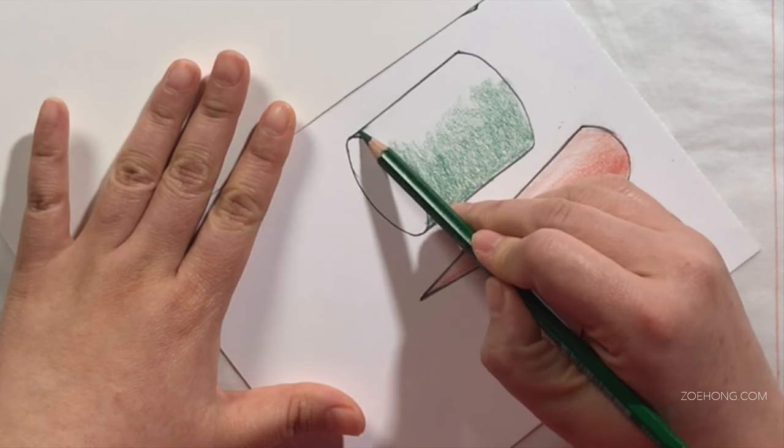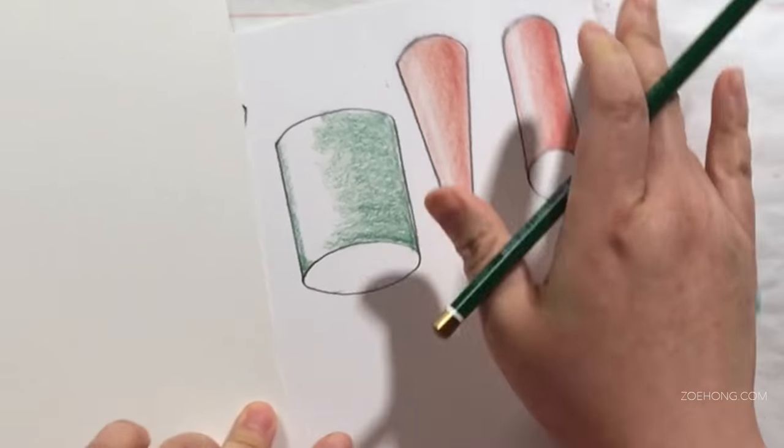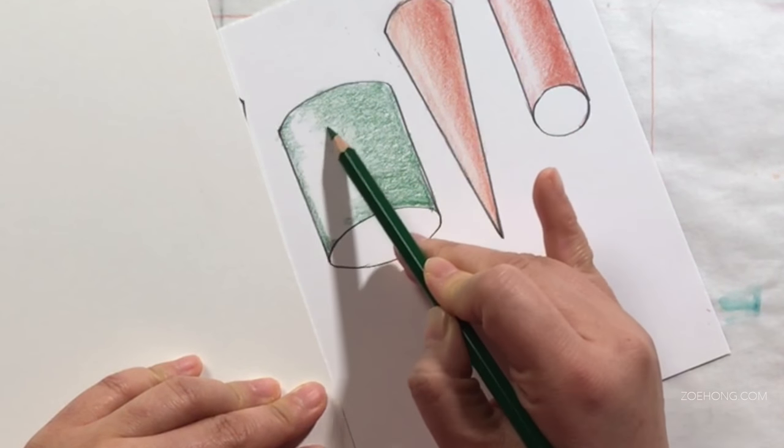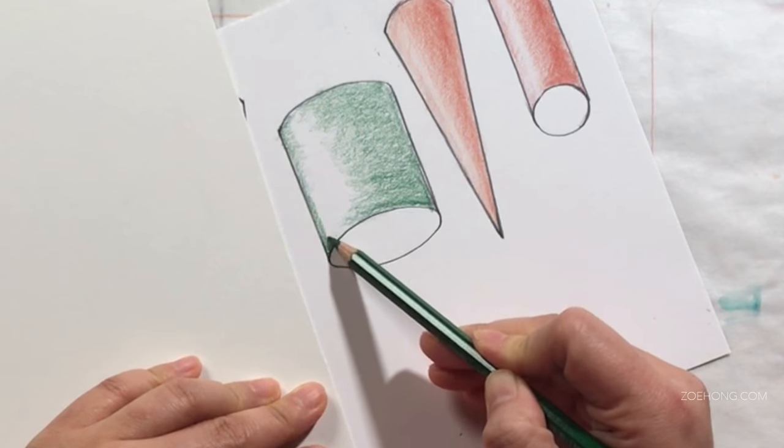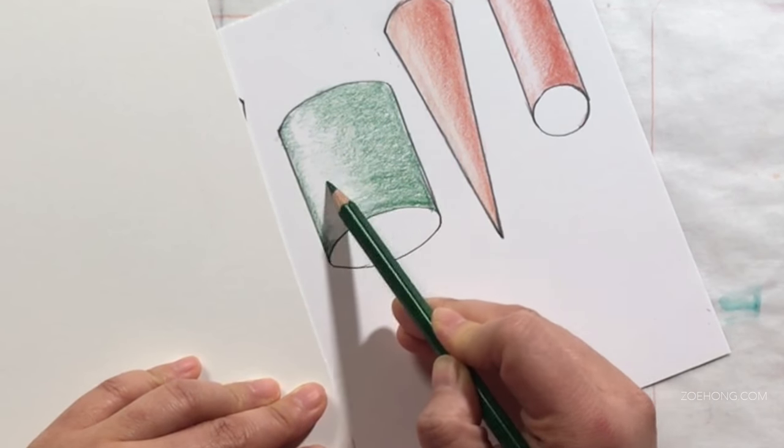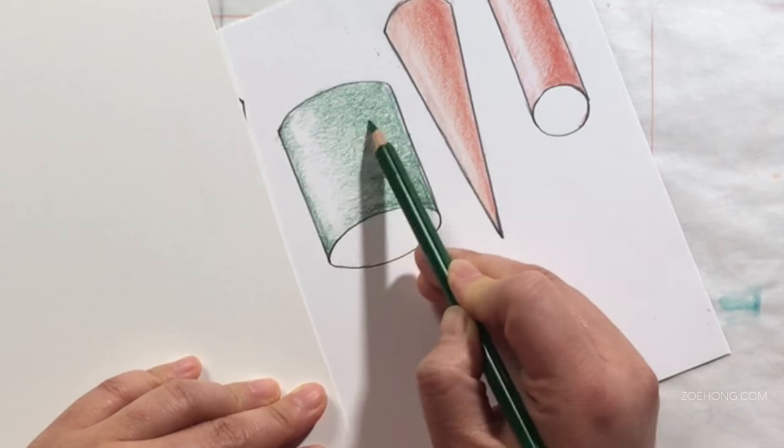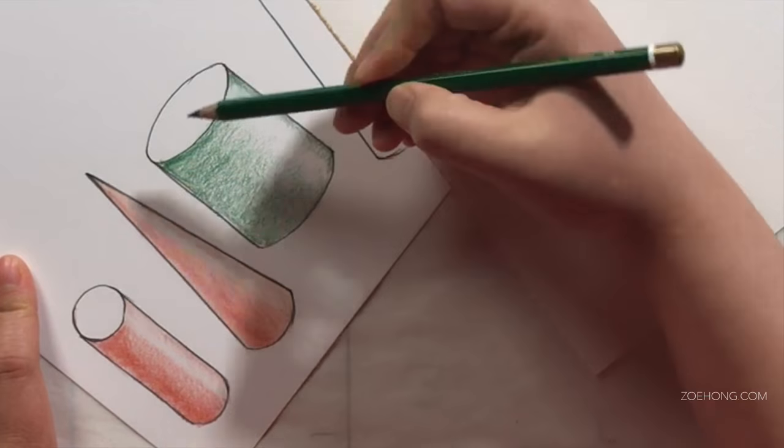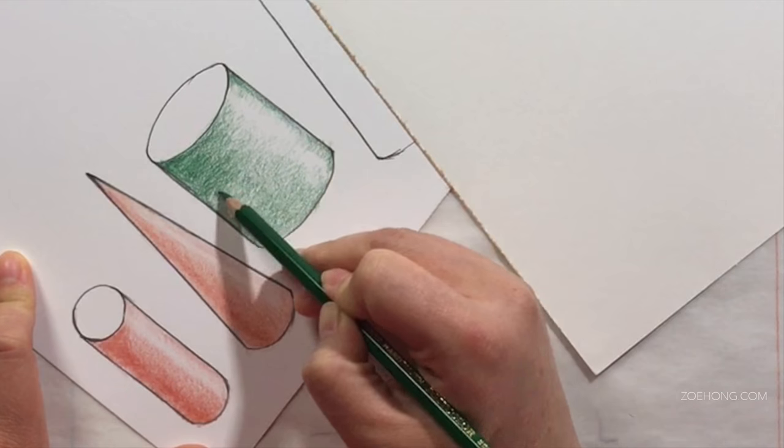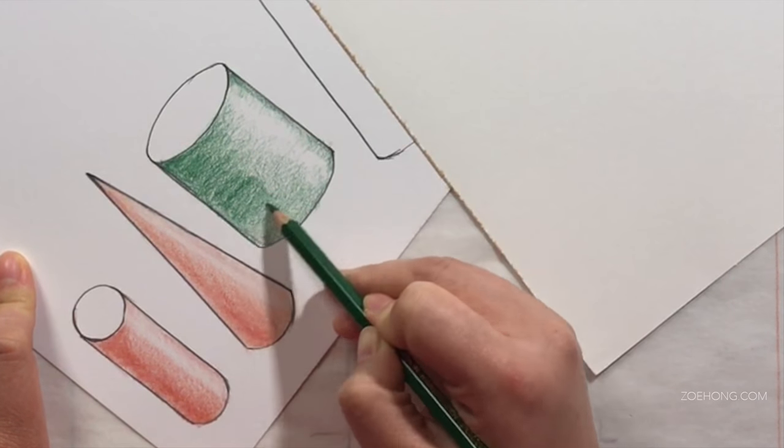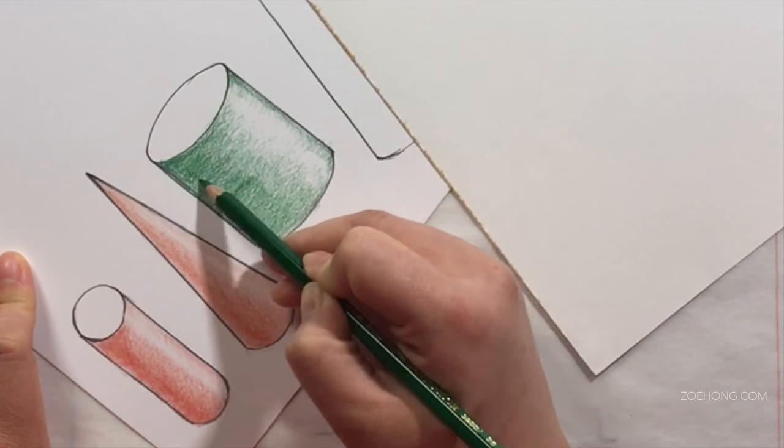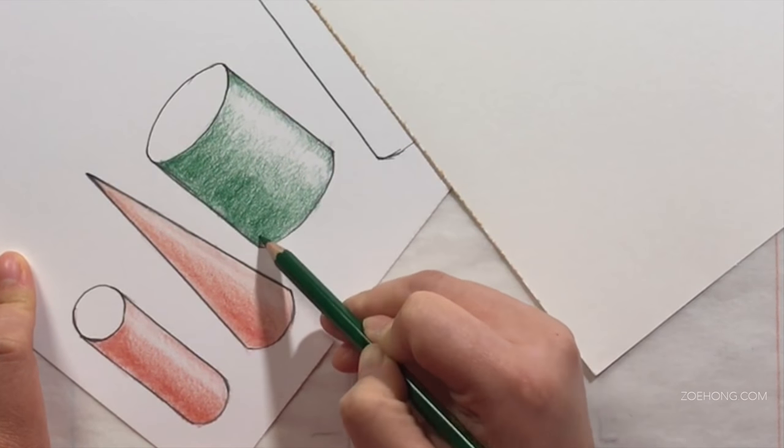When I'm coloring things in with a darker color like this dark green, I'm probably not going to be able to erase enough of it to get the highlight, so I make sure to leave enough of the white of the paper to create the highlight. I like to use the pencil strokes in the direction of the thing that I am coloring. With this cylinder I'm going side to side in a rounded direction to give that push, that rounded appearance.